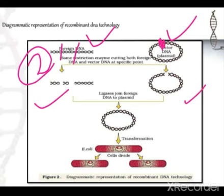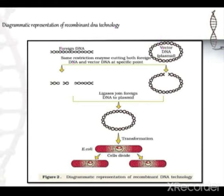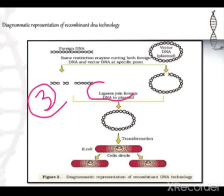The next step is that we have to join our desired DNA and the plasmid DNA. So joining is the third step. The role in joining is performed by DNA ligase. Enzymes play a very important role — without enzymes, rDNA technology is not possible.